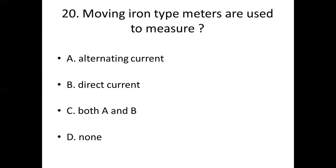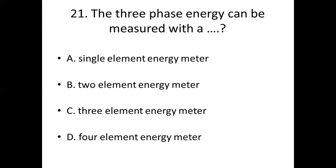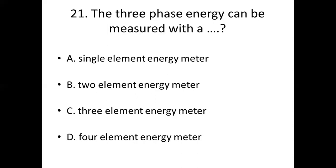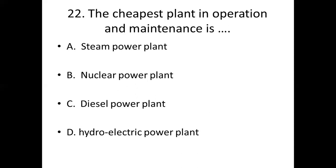Twenty-first bit. The three phase energy can be measured with a dash. Option A: Single element energy meter. Option B: Two element energy meter. Option C: Three element energy meter. Option D: Four element energy meter. Answer: Option B, Two element energy meter.